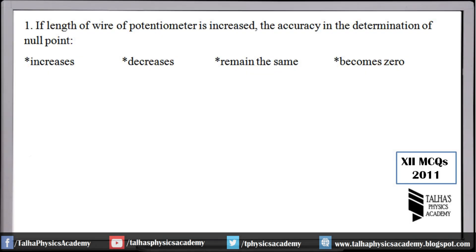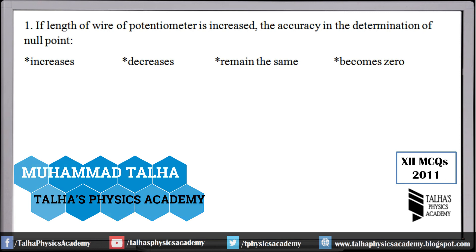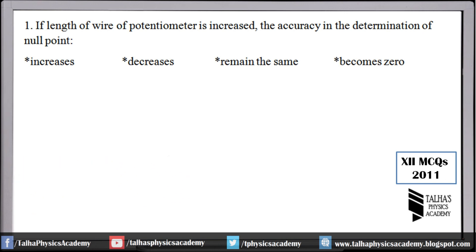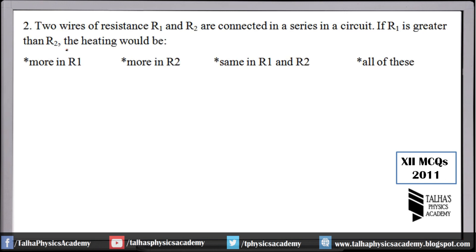Second year MCQs 2011, first multiple choice question: if the length of wire of a potentiometer is increased, what is the effect on the accuracy in the determination of the null point? The right answer is: accuracy increases. Remember, whenever the length of the potentiometer wire is increased, the accuracy increases. This was also discussed in the potentiometer topic lecture.